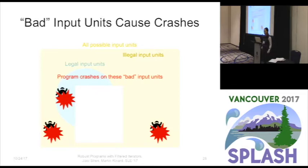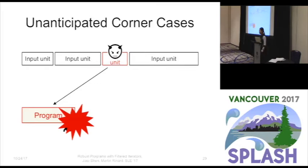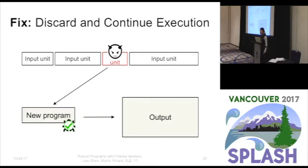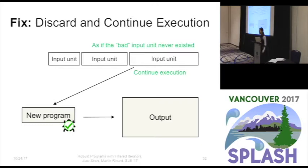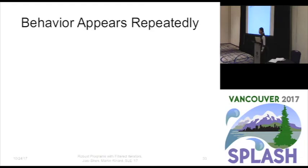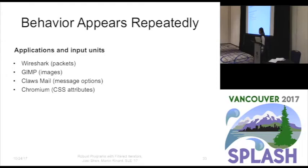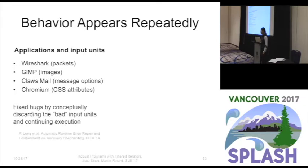Now let's look at bad input units in the context of program execution. When the program has a bug, people sometimes come in to fix it. Here's one possible fix: we can add a sanity check to detect corner cases so that the next time the program reads the input unit, it discards it and continues execution as if the bad input unit never existed. It turns out this conceptual behavior appears repeatedly across a wide range of applications — servers processing network packets, image processors, applications handling message options or CSS attributes — all fixing bugs by discarding bad input units.